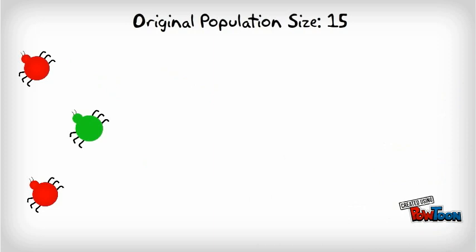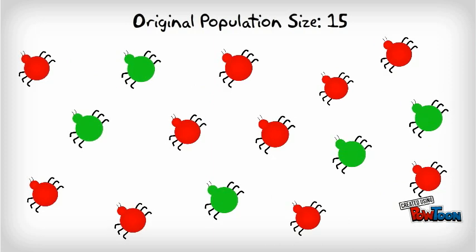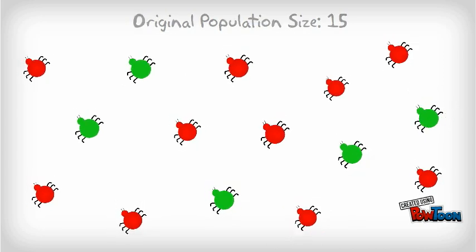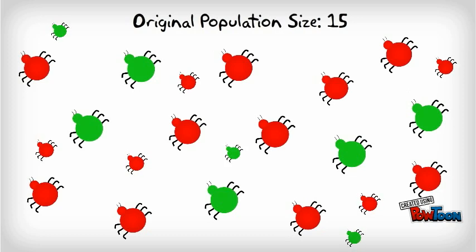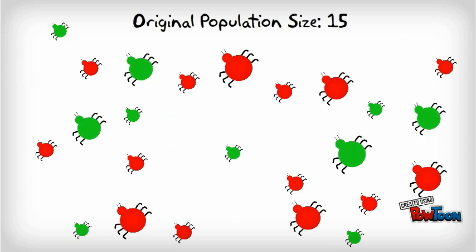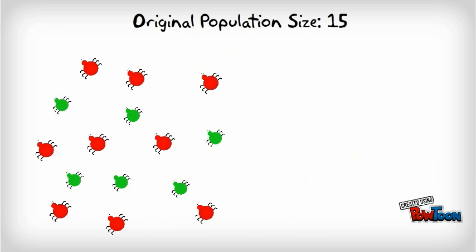In another population of beetles, ten are red and five are green for a total population of fifteen beetles. This generation mates and their offspring also have a 50-50 chance of being red or green. By chance, they have nine red and six green offspring. Once the original generation dies, the population is now 60% red and 40% green.